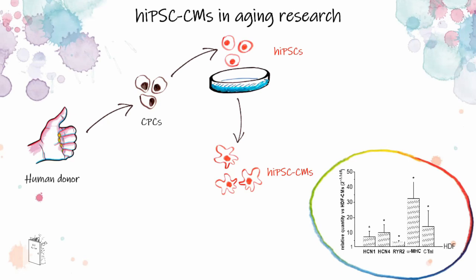Why did I prefer cardiac progenitor cells to other somatic sources? Because it has been demonstrated that iPS-derived cardiomyocytes from cardiac sources express more cardiac markers than cardiomyocytes from iPS cells with other somatic sources, like for example human dermal fibroblasts.